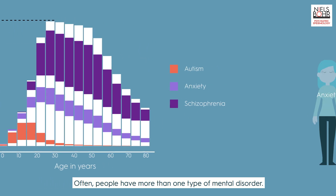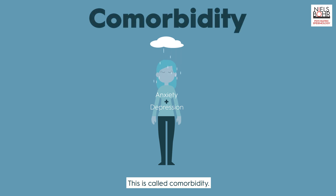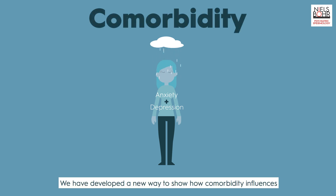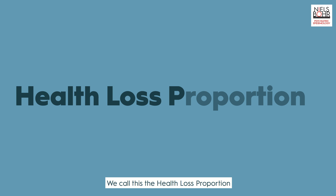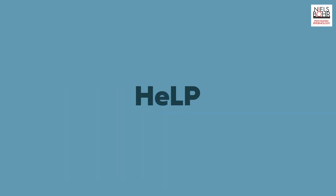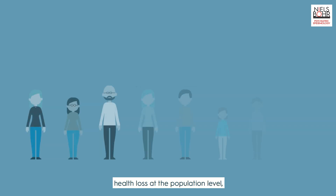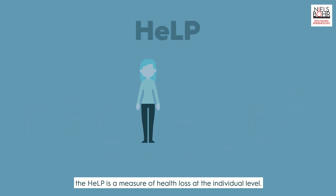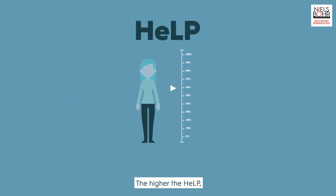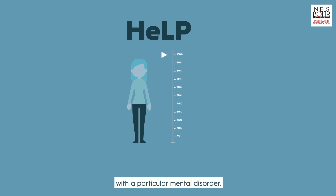Often, people have more than one type of mental disorder — this is called comorbidity. We have developed a new way to show how comorbidity influences years lived with disability. We call this the health loss proportion, or HELP. While years lived with disability measures health loss at the population level, the HELP is a measure of health loss at the individual level. The higher the HELP, the greater the average health loss for individuals with a particular mental disorder.